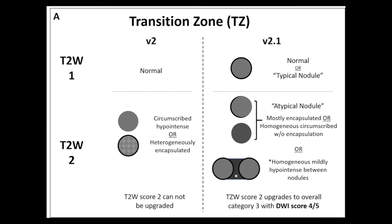Additionally, and very importantly, lesions scored as a 2 based on the T2-weighted score could also be upgraded to a score of 3 if they demonstrated marked diffusion restriction — markedly hyper-intense on high B-value DWI and markedly hypo-intense on ADC. The idea being that atypical nodules can occasionally contain cancer and DWI may increase sensitivity in the TZ.